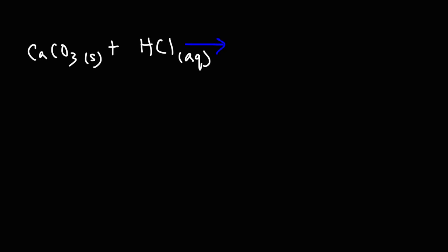In this tutorial, we're going to talk about how to predict the products of the reaction between calcium carbonate and hydrochloric acid, and we're also going to talk about how to balance the equation and how to write the net ionic equation. So let's begin.